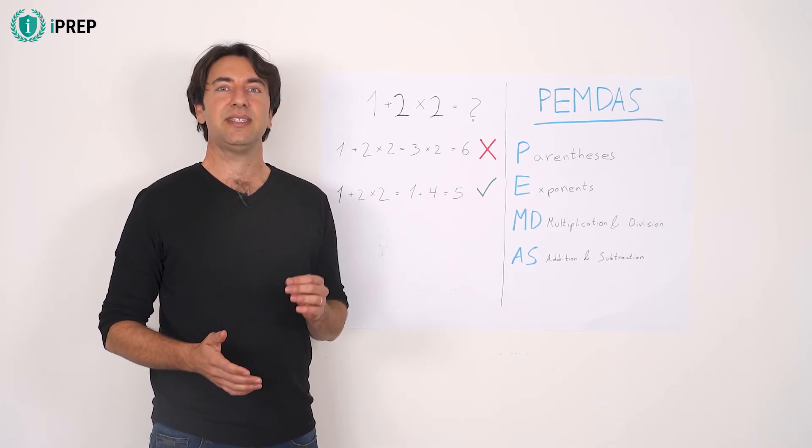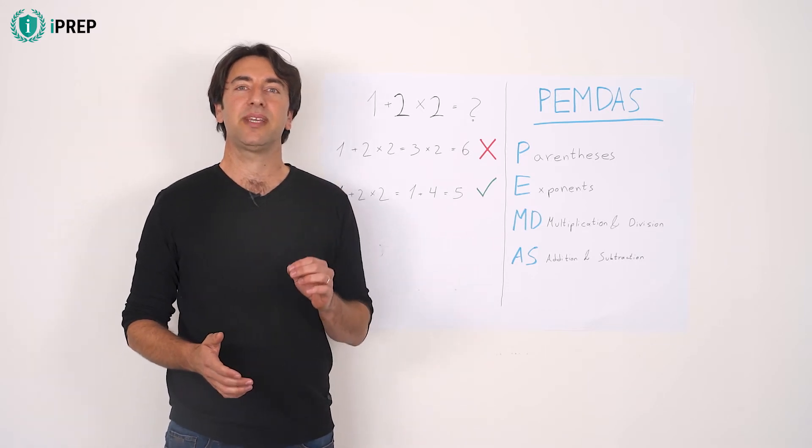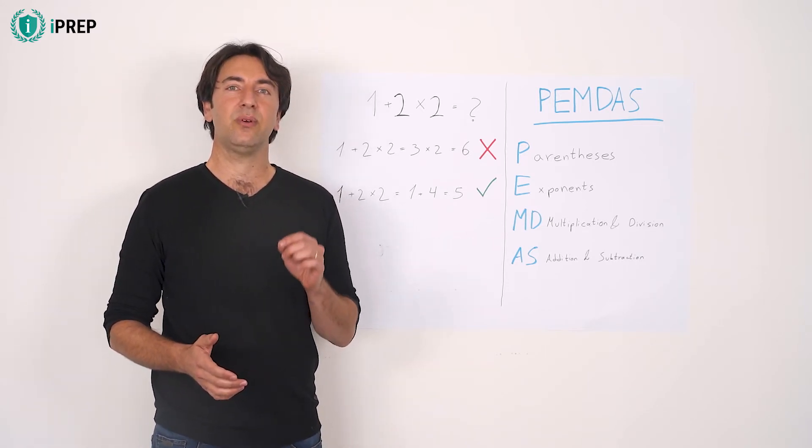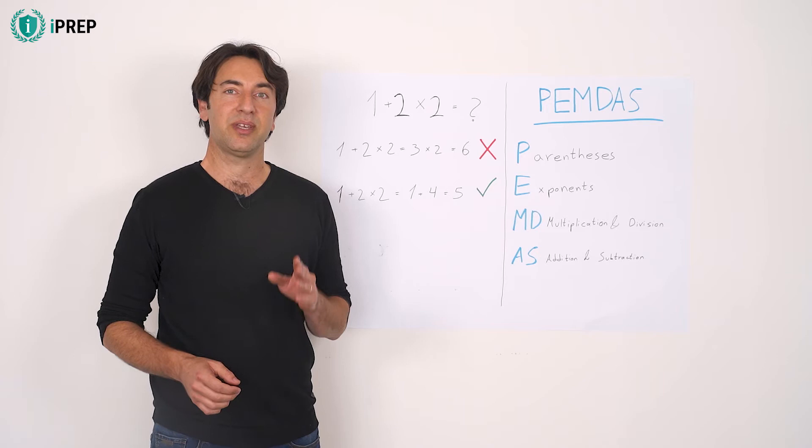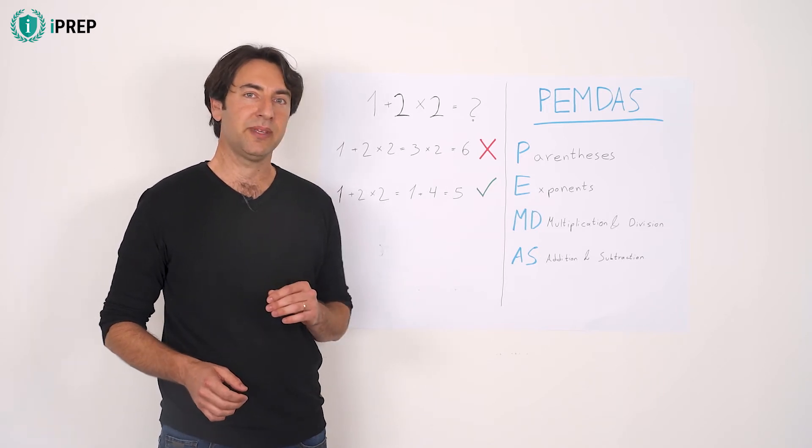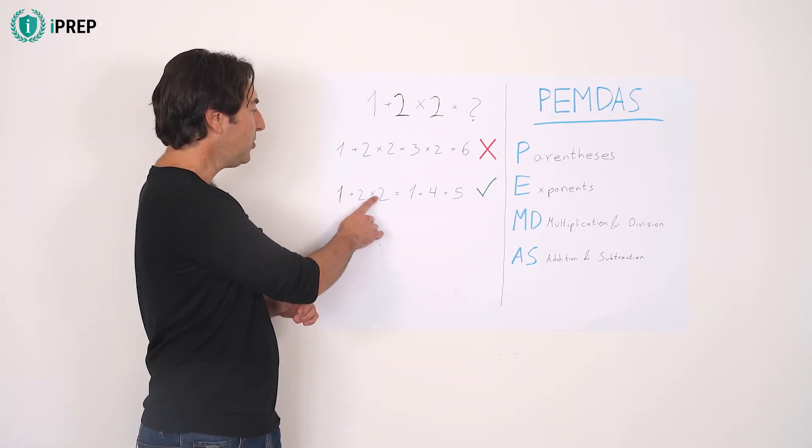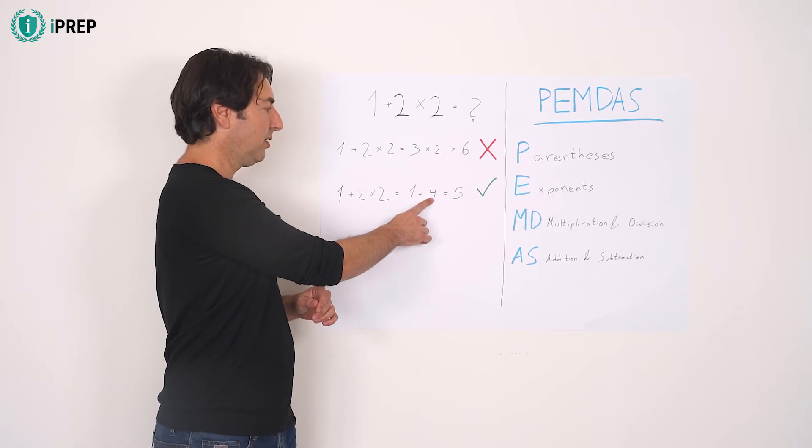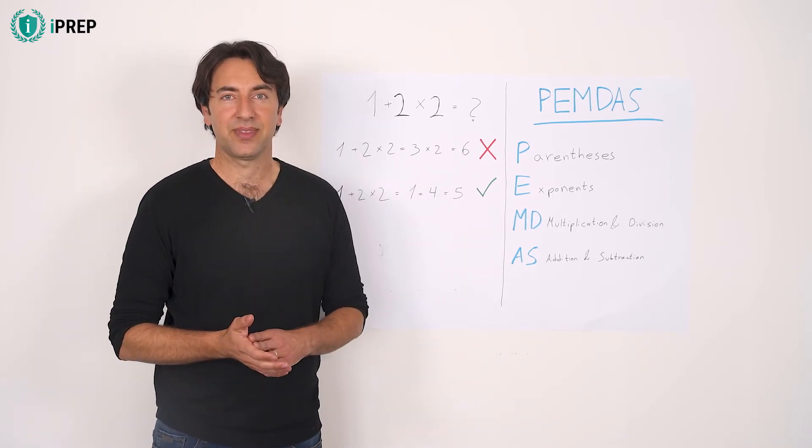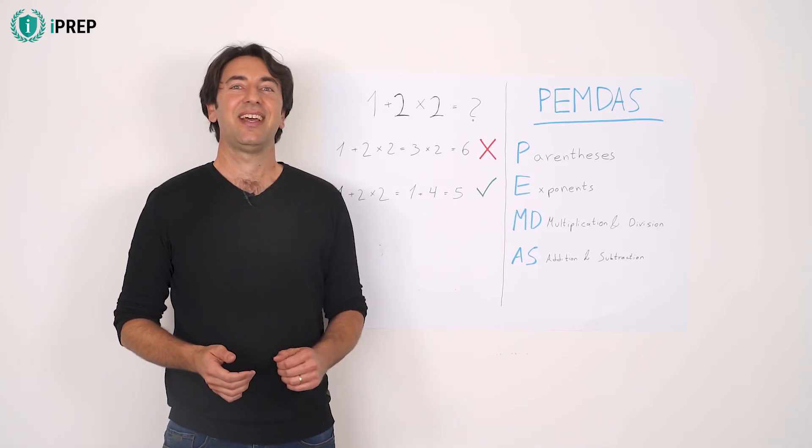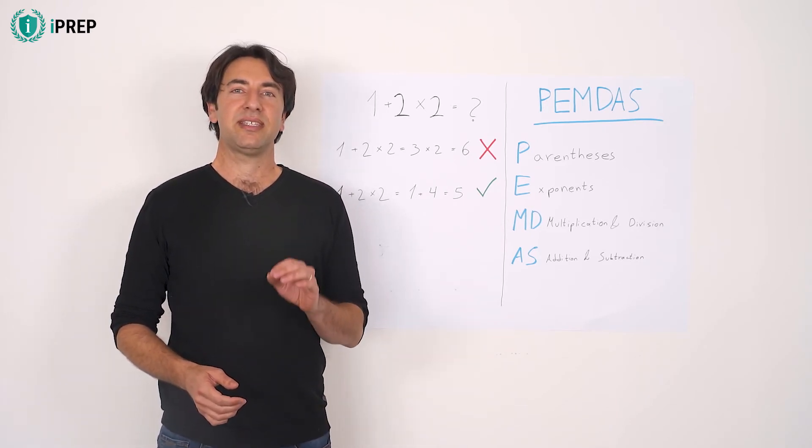The order of operations rule determines that unless specified otherwise, multiplication always comes before addition. Therefore, the correct way to solve this problem is 2 times 2 equals 4, 1 plus 4 equals 5. That is correct.